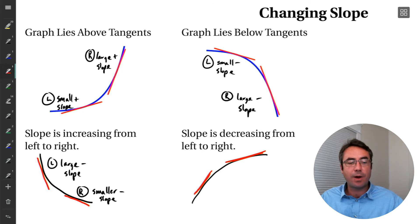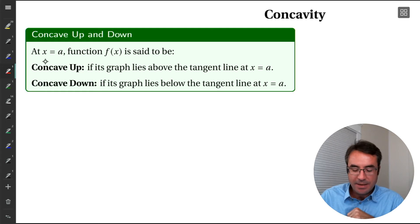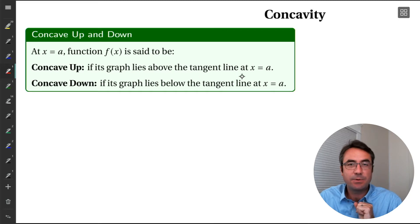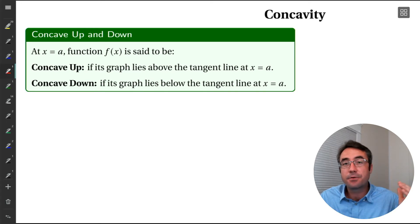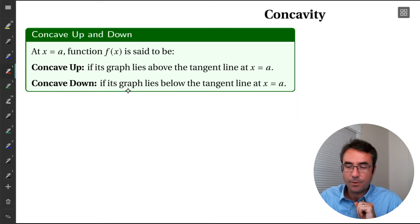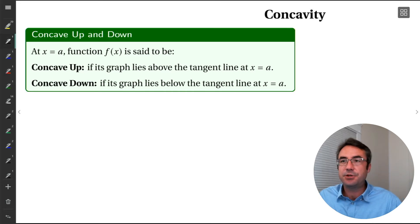Now, what does this mean for the shape of our graph? We give this behavior a special name — we call it concavity. So we say that at x equals a, function f is said to be concave up if the graph of the function lies above the tangent line at x equals a. If we say our graph is concave down at x equals a, that means the graph of our function lies below the tangent line at x equals a. So concavity describes how the graph bends.